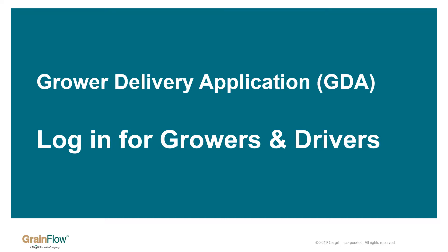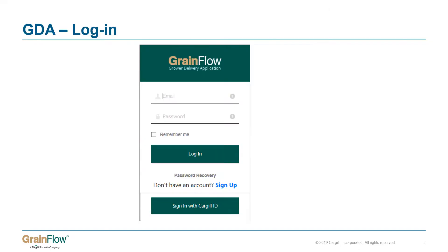Login for Growers and Drivers. To enter the GDA, all you have to do is enter your registered email address and password. We suggest that you store these details as you will need them each time you log on. Alternatively, click the Remember Me checkbox, which will store your details for the next time you log on.